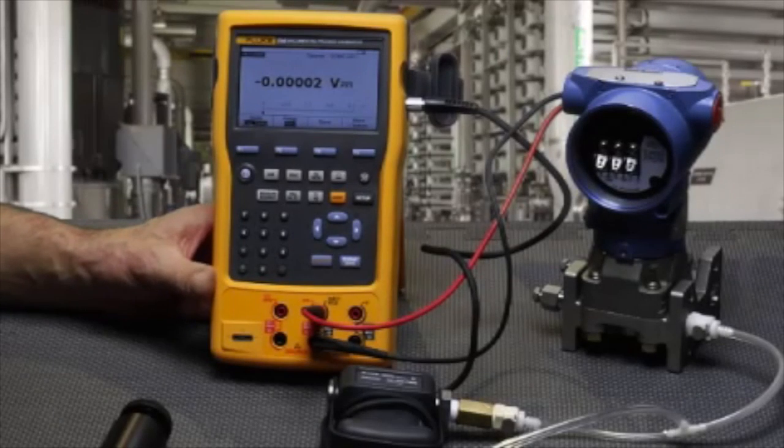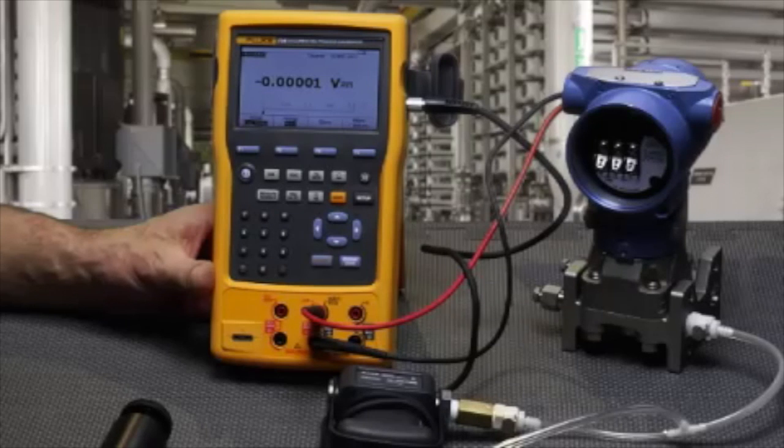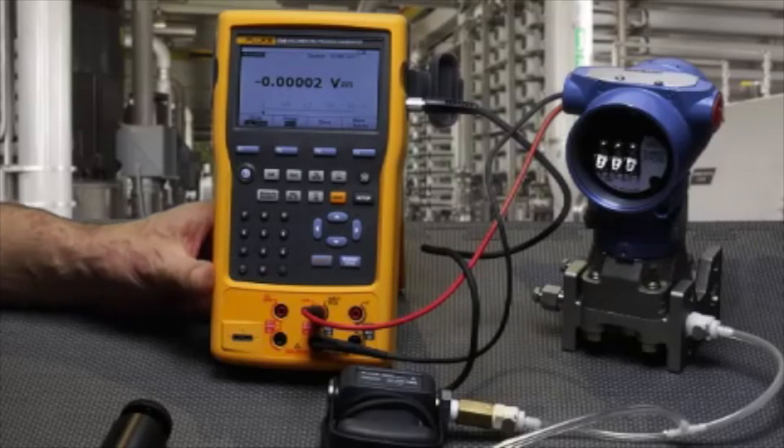I'd like to demonstrate how to calibrate a Rosemount 3051 HART Smart pressure transmitter using the Fluke 754 documenting process calibrator with HART built in.